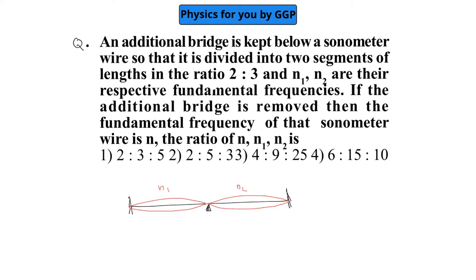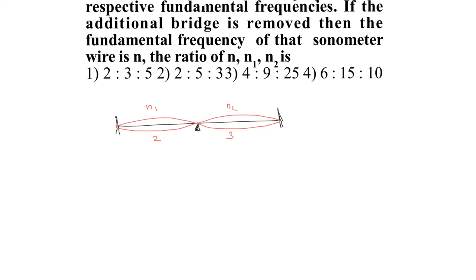The second portion oscillates with frequency n2, and their lengths are in the ratio 2 is to 3. If you remove this bridge, then the entire wire is going to oscillate in one loop.